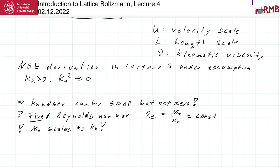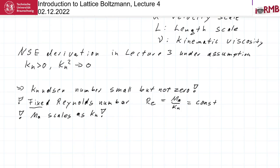You have the same problem only if the Mach number and the Knudsen number scale the same way. You get the same physical behavior if you increase the Mach number and the Knudsen number together, or decrease them together — but only as long as both are sufficiently small, because if you go across Mach number one, the behavior changes. And very importantly — why we are here doing things differently — the Navier-Stokes equation is not the truth.